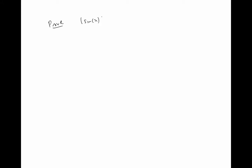In this video, I want to prove the fact that the absolute value of sine x is always less than or equal to x. Notice that if x is bigger than one or x is less than negative one, then the absolute value of x is bigger than one and sine of x always has absolute value less than one. So the formula is proved in that case for sure.